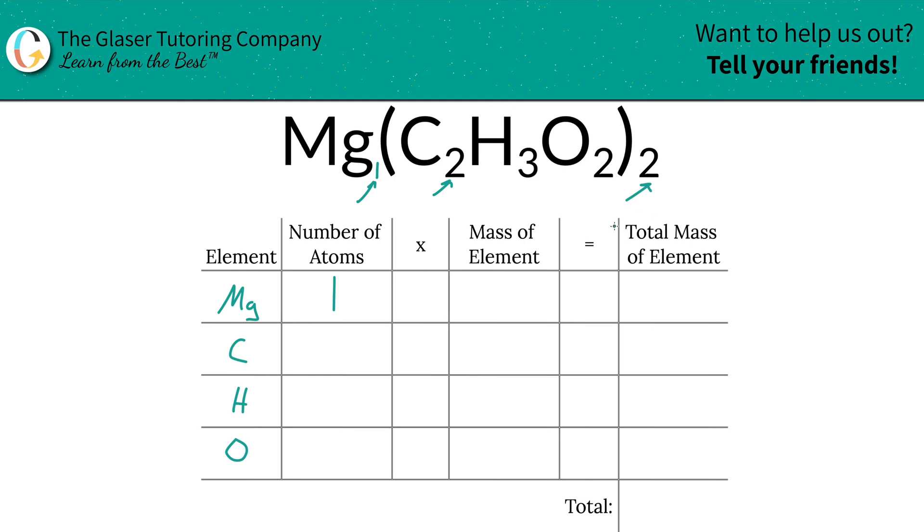So actually, in total, you'd have four carbons. In other words, just simply take the inner subscript, multiply it by the outer to find the amount of carbons. That's four.